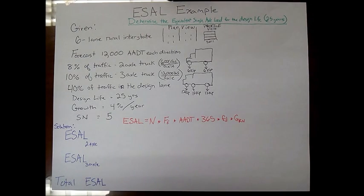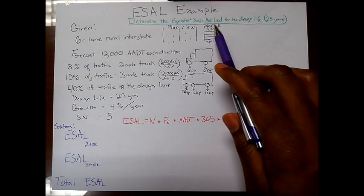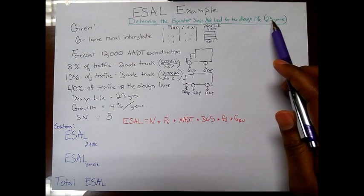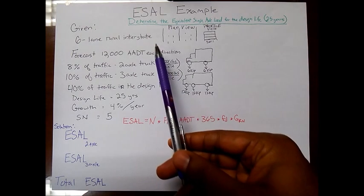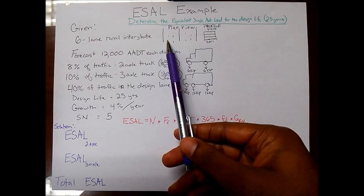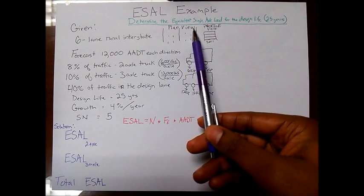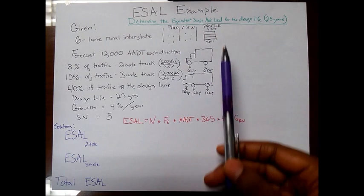Here's an ESAL example: determine the equivalent single axle load for the design life, which was 25 years. Right off the bat you are given a lot of information. You have a six-lane rural interstate, so this is the plan view of that road and this is the profile view.